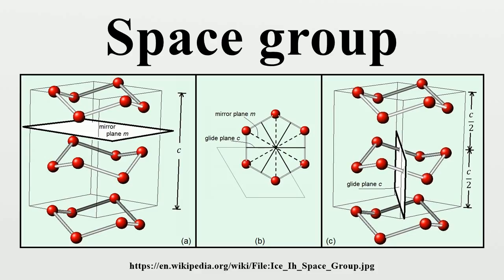Glide planes: A glide plane is a reflection in a plane, followed by a translation parallel with that plane. This is noted by A, B or C, depending on which axis the glide is along. There is also the N glide, which is a glide along the half of a diagonal of a face, and the D glide, which is a fourth of the way along either a face or space diagonal of the unit cell. The latter is called the diamond glide plane as it features in the diamond structure.